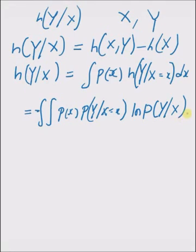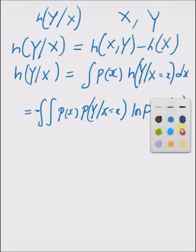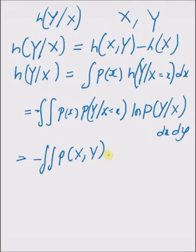dx dy which is equal to, if you multiply these two probability densities, we get the joint density that is p of x comma y. And then we have logarithm of p of Y given X, dx dy which is equal to,